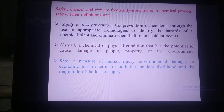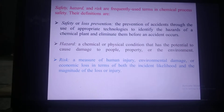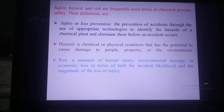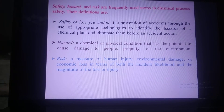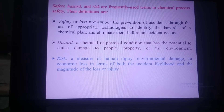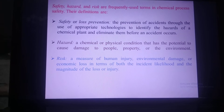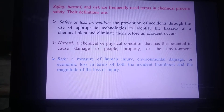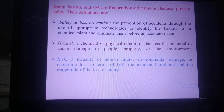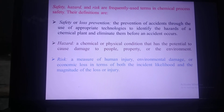The second term is hazard — a hazard is a chemical or physical condition that has the potential to cause damage to people, property, or the environment. The third term is risk — risk is a measure of human injury, environmental damage, or economic loss in terms of both the incident likelihood and the magnitude of loss or injury.